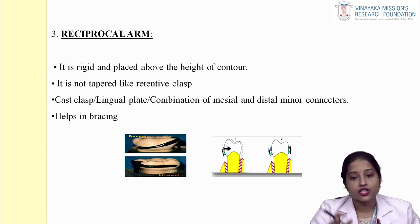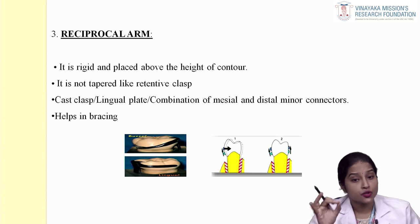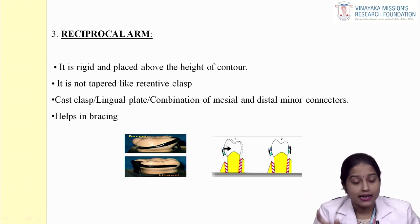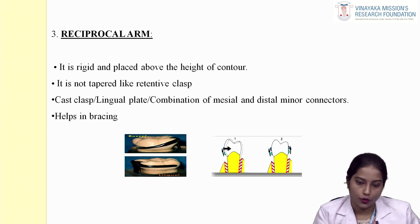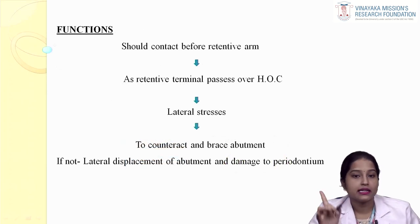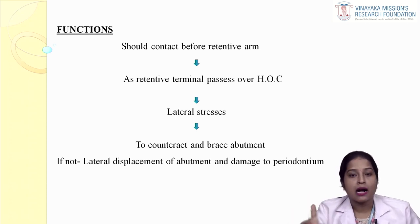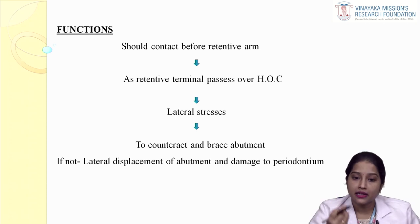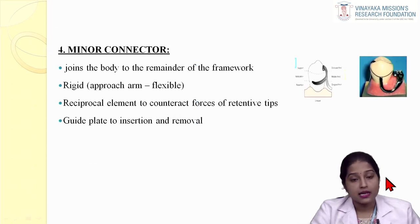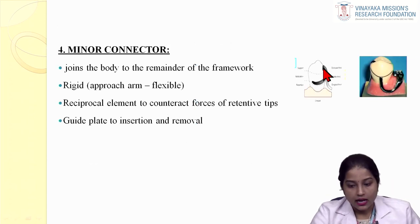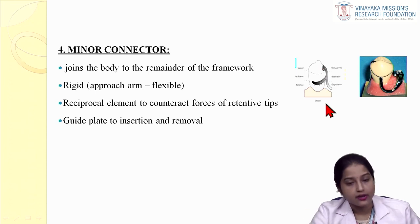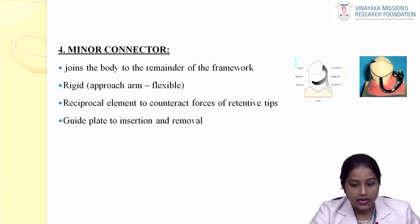During insertion and removal, the reciprocal arm should be in contact with the tooth; it is rigid and placed above the height of contour. Only the retentive terminus is placed in the undercut area below the height of contour; the remaining components — reciprocal arm, rest, and even the middle and proximal thirds of the retentive arm — are placed above the height of contour. The minor connector joins the body to the remainder of the framework, must be rigid, helps in stability, and also acts as a guide plane for insertion and removal.